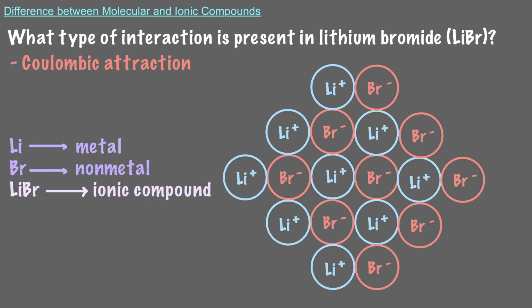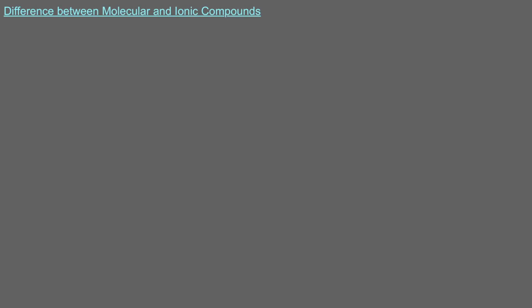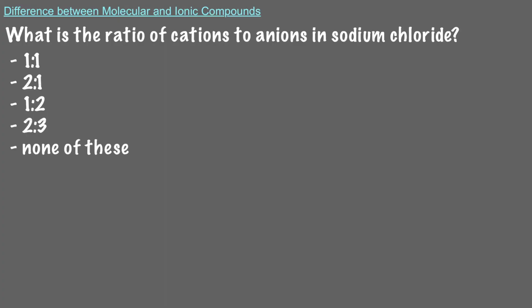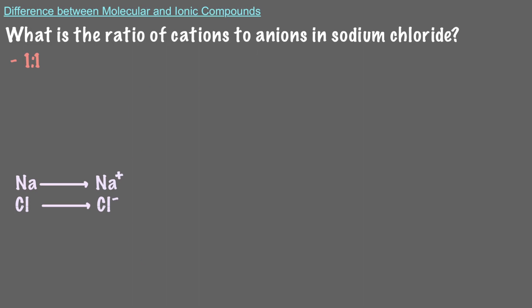Remember, ionic compounds are neutral, so the charges of the cations have to cancel out the charges of the anions. What is the ratio of cations to anions in sodium chloride? Sodium cations have a positive 1 charge, while chloride anions have a negative 1 charge, so the ratio of cations to anions in sodium chloride is 1 to 1. Therefore, the sodium chloride lattice will look something like this.